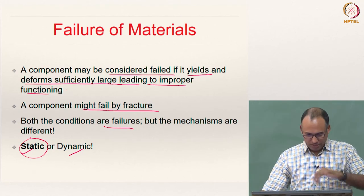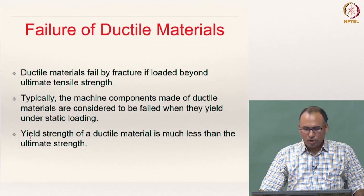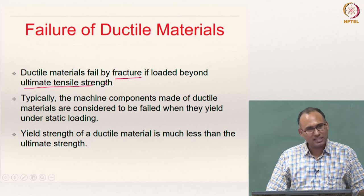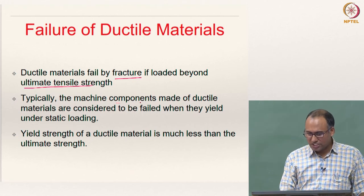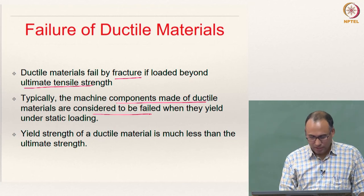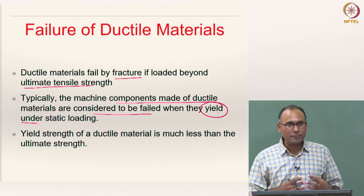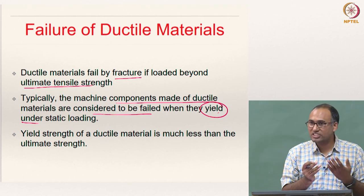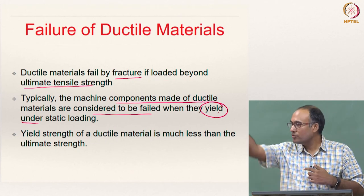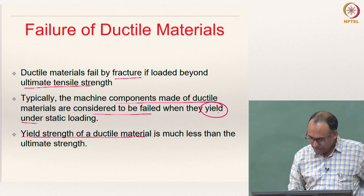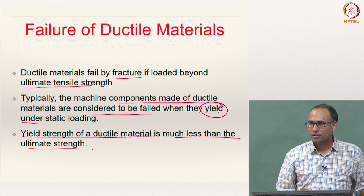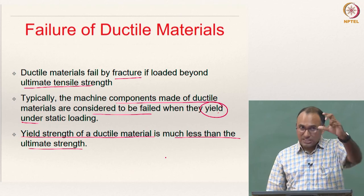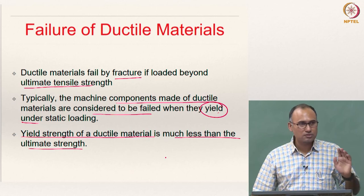Dynamic loading scenarios we will see in the second module. How ductile materials fail: they fail by fracture if you load them beyond ultimate tensile strength, but typically machine components made of ductile materials are considered to have failed when they yield. So when designing ductile material components, you really do not worry about the ultimate failure fracture, but only focus on whether they are yielding or not. It is a very important thing to realize.